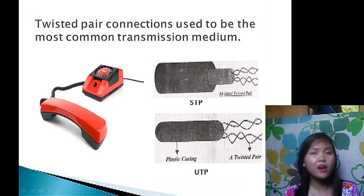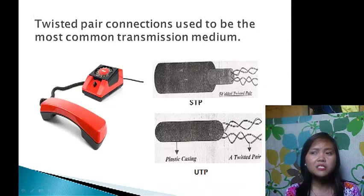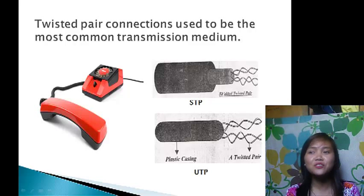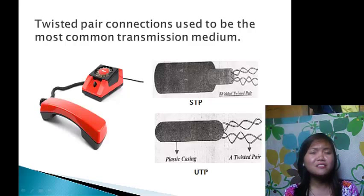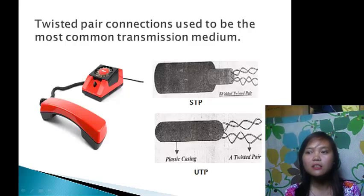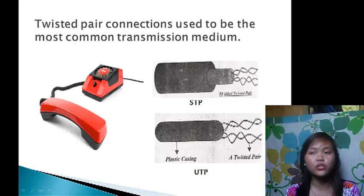The most popular network cabling is twisted pair. It is lightweight, easy to install, inexpensive, and supports many different types of networks. There are two types of twisted pair cabling: the unshielded twisted pair, or UTP, and the shielded twisted pair, or STP.